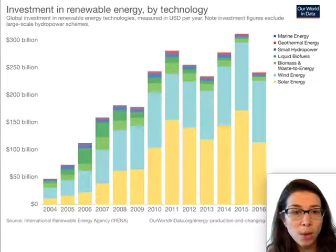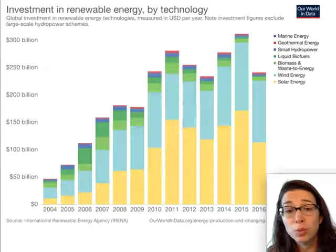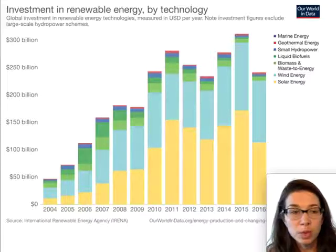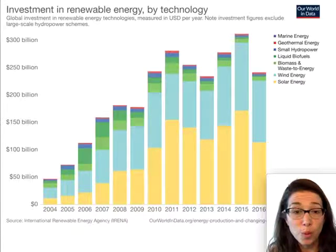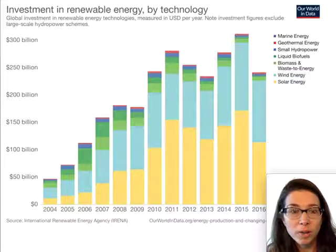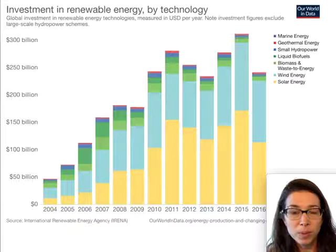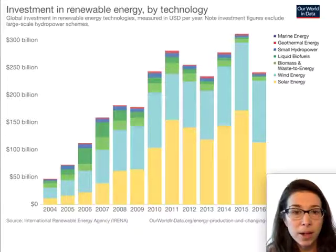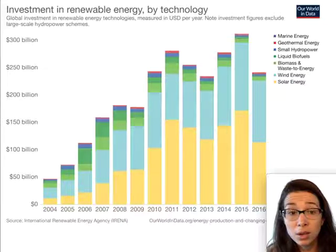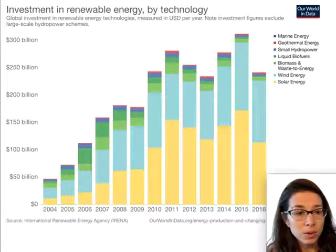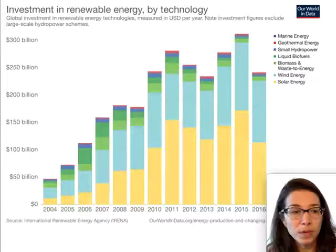How much money are we investing in renewable energy, broken down by technology? Looking at solar in yellow, we ramped up investment until about 2011, and since then we've been consistently investing around the same amount, with perhaps some increase in other types like wind. That's promising — we're putting more money into these technologies and this investment is going to pay off.